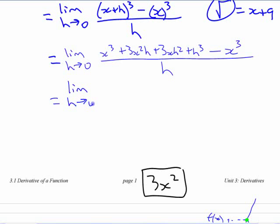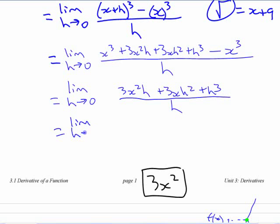Don't just start crossing stuff off—it's hard to follow your work. You can rewrite it better. The x³ minus x³ disappears, so I have 3x²h + 3xh² + h³ over h. Then you divide by h. You don't have to factor—just divide each term. You get 3x² + 3xh + h² when you divide by h.